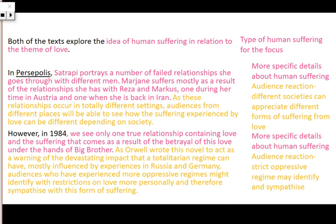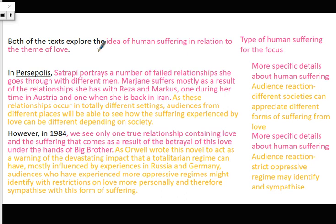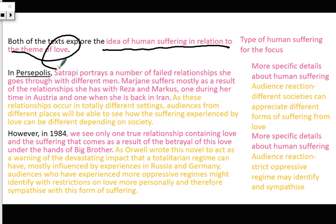In all other aspects things were great — you used your Big Chunkies to identify human suffering and how that's shown. But in terms of engaging audiences of various times and/or places, that wasn't quite shown throughout. So we would have our Big Chunky relating to the theme of love — that's the type of human suffering we are focusing on for this Big Chunky. In Persepolis, Satrapi portrays a number of failed relationships Marjane goes through with different men. Marjane suffers mostly as a result of the relationships she has with Reza and Marcus — one during her time in Austria and one when she's back in Iran. That aspect of human suffering is given more detail in our Mini Chunky. And as these relationships occur in totally different settings, audiences from different places will be able to see how the suffering experienced through love can be different depending on society.